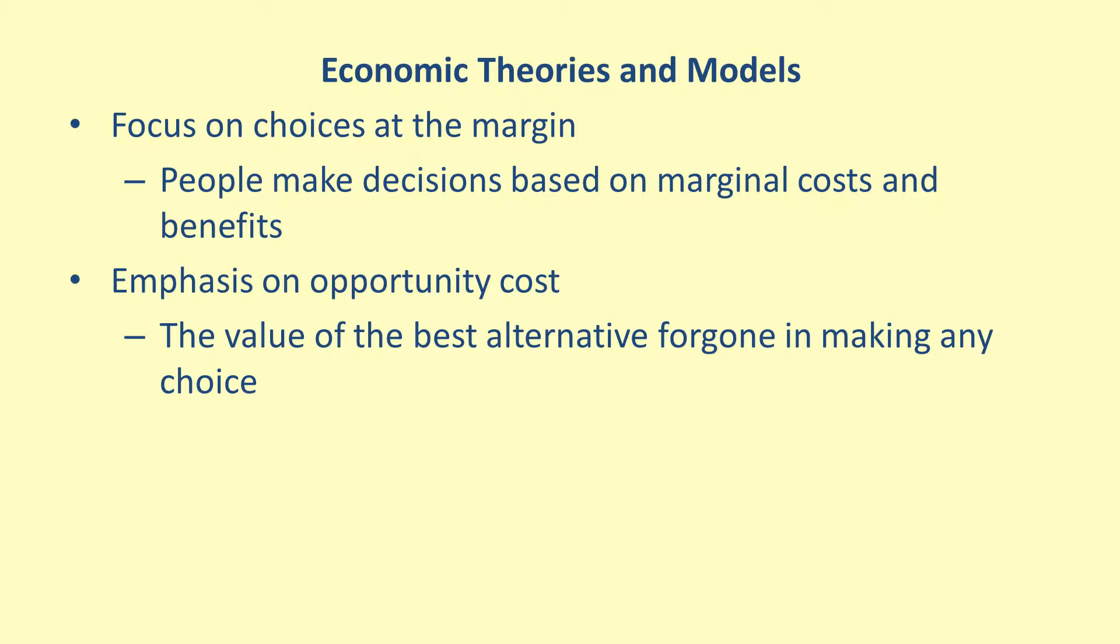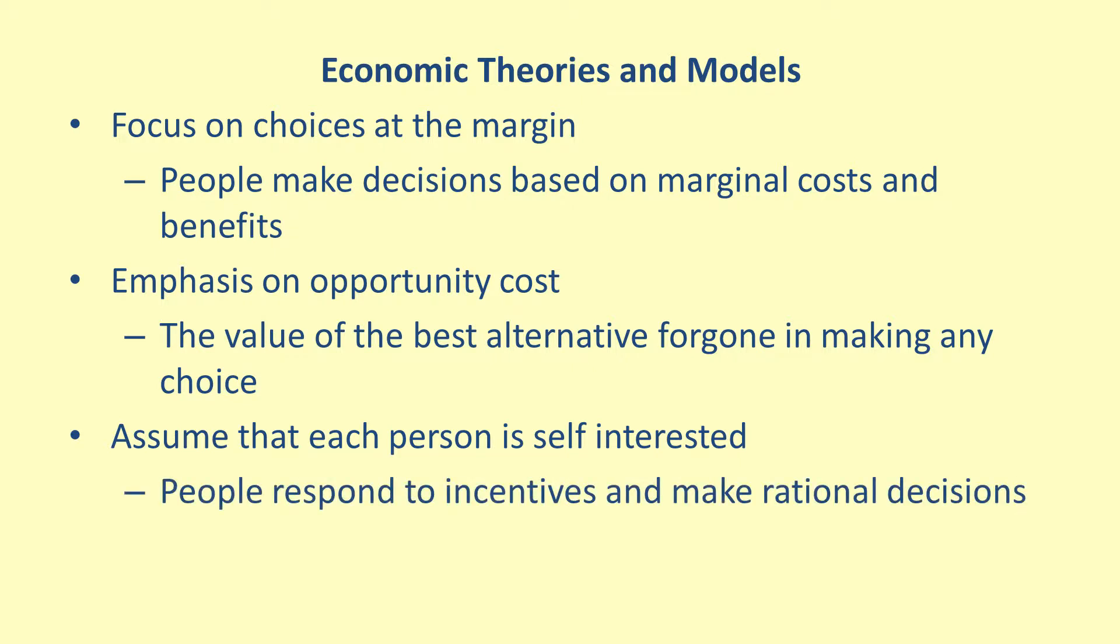A third important concept in economic theories and models is the assumption that people are self-interested. That is, we assume that people respond to incentives and make rational decisions while looking to maximize their own self-interest. For example, models will assume that if the price of a non-essential product, such as jewelry, goes up, consumers will buy less of that product.